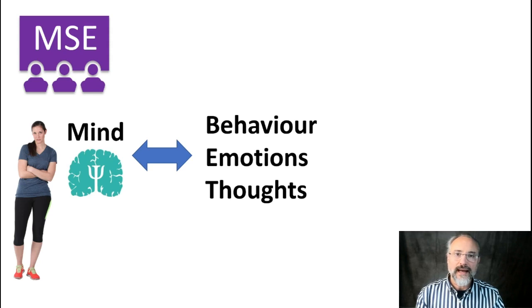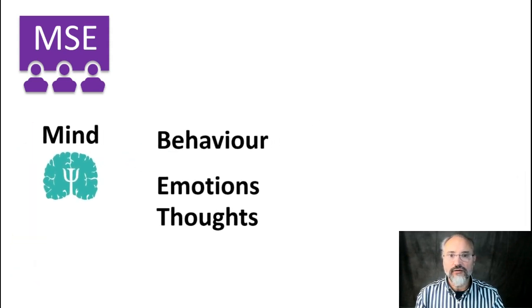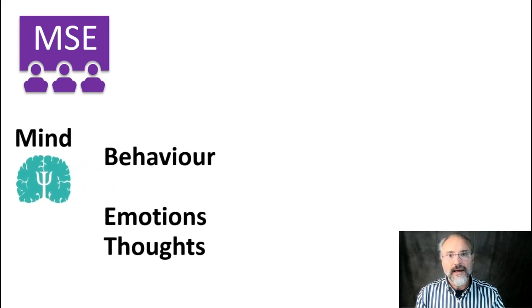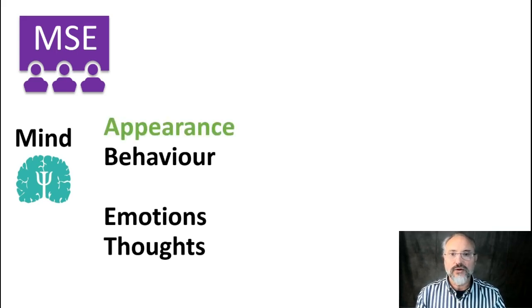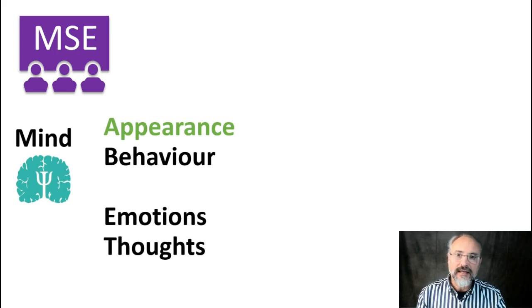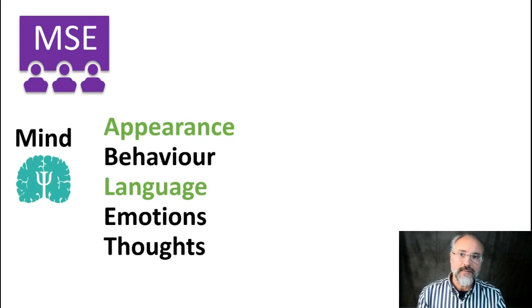When we examine and present a mental state examination, we go systematically through all the functions of the mind. Behaviour, emotions and thoughts are three of the functions of the mind. We normally split behaviour into more headings — we often talk about appearance as a physical function of behaviour and an indication of a state of mind, how somebody looks. Also language, how somebody speaks, which also tells us about the state of their mind and is essentially a behaviour.